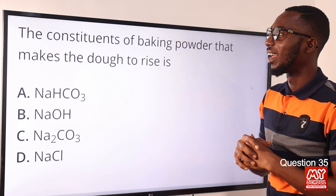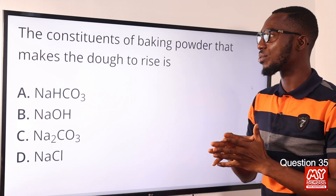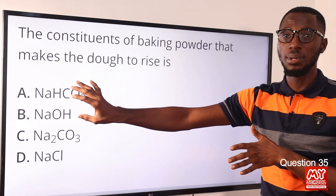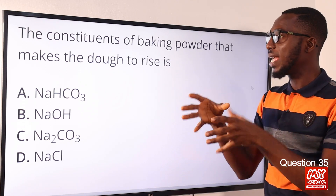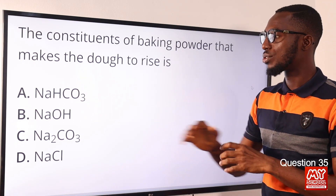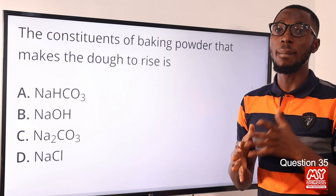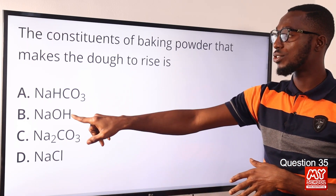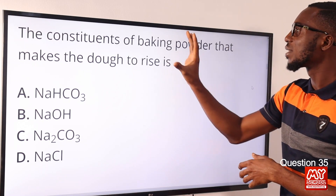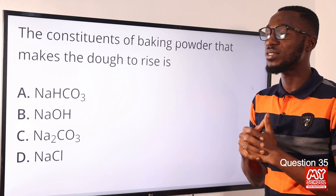Question 35. The constituent of baking powder that makes the dough to rise is sodium bicarbonate. Baking powder contains sodium bicarbonate and a weak acid. The main constituent that makes the dough to rise is the sodium bicarbonate. Caustic soda and washing soda can be used to remove permanent hardness of water. Sodium bicarbonate is also known as baking soda. The constituent of baking powder that makes the dough to rise is sodium bicarbonate. The correct option here is option A.